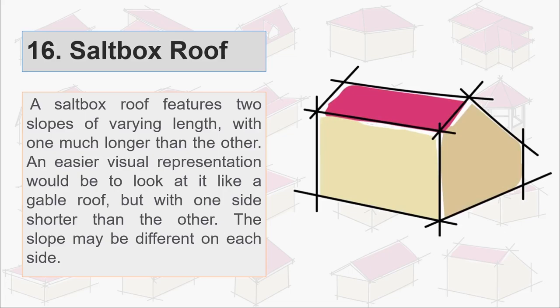Sixteenth is salt box roof. A salt box roof features two slopes of varying length with one much longer than the other. An easier visual representation would be to look at it like a gable roof but with one side shorter than the other one. The slope may be different in each side.